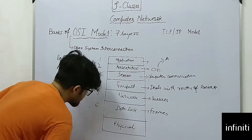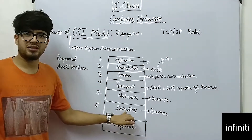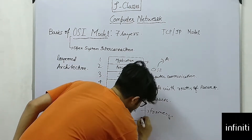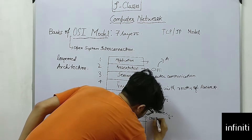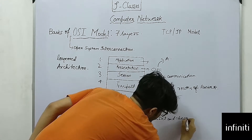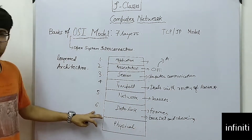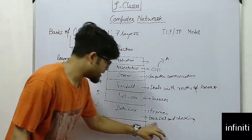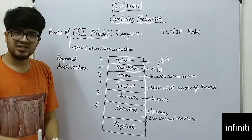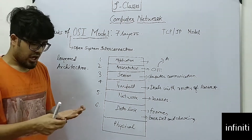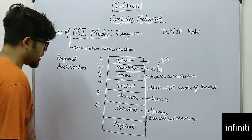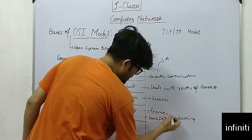The data link layer can be termed the most important layer because it deals with error detection and error checking. That is the most important function of this layer. It detects and checks errors using different methods like parity checking, Huffman coding, and other formats, which we will study in separate videos.